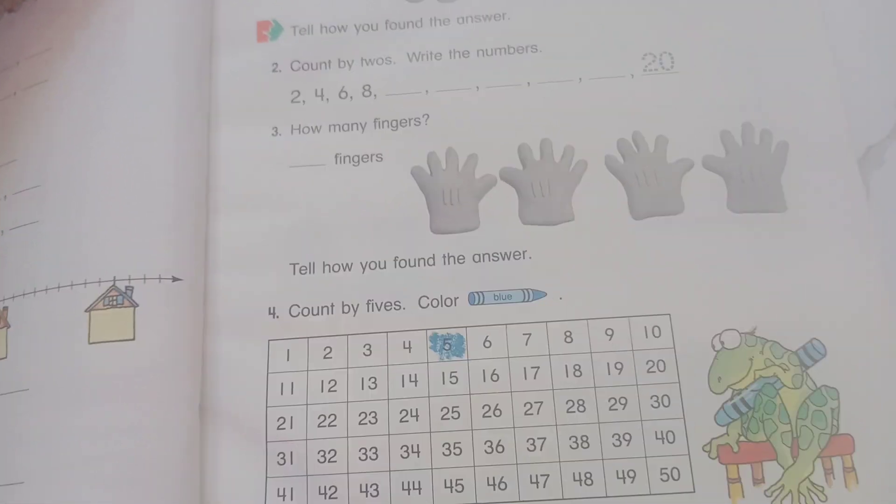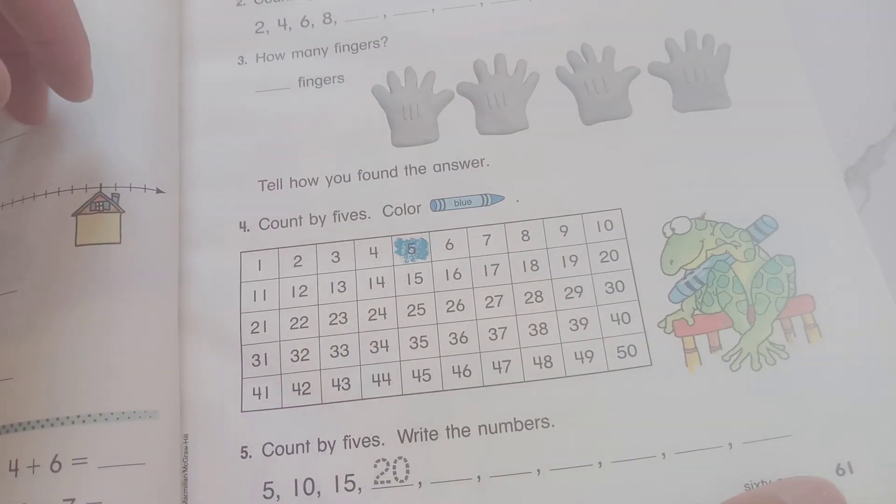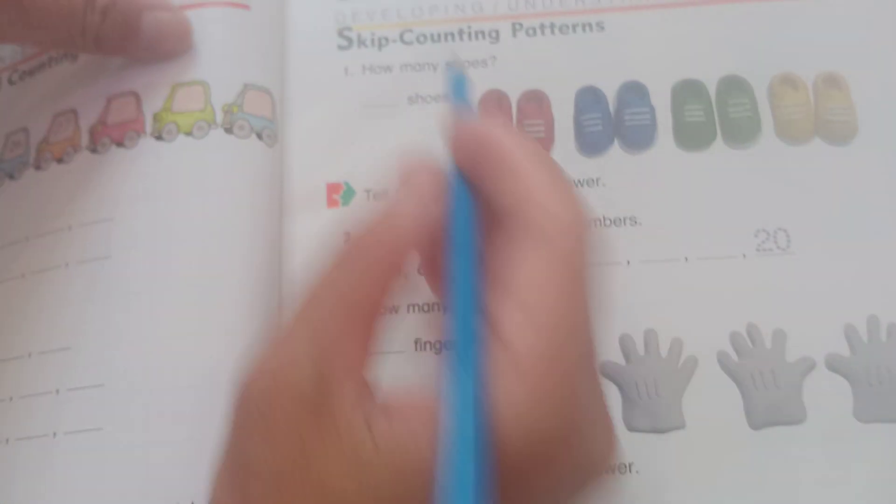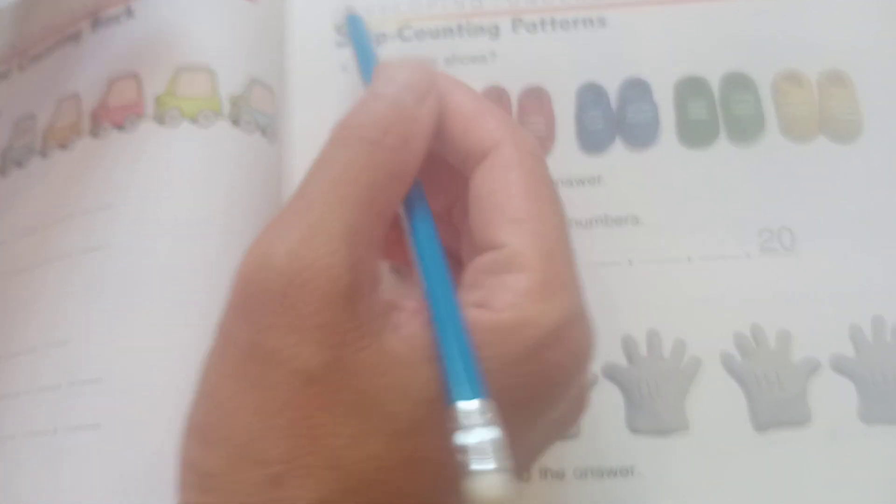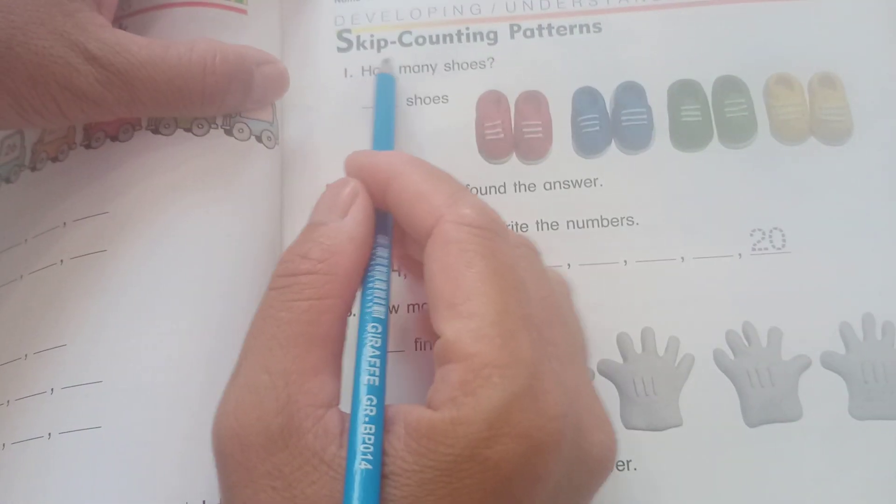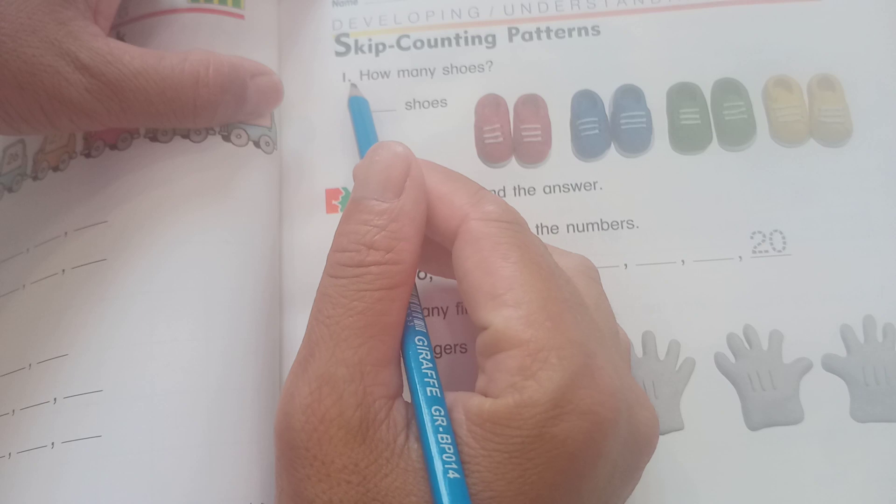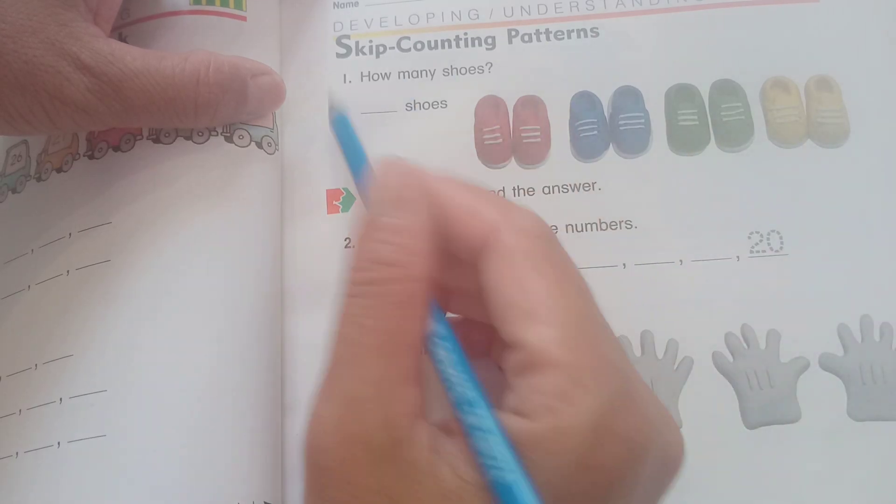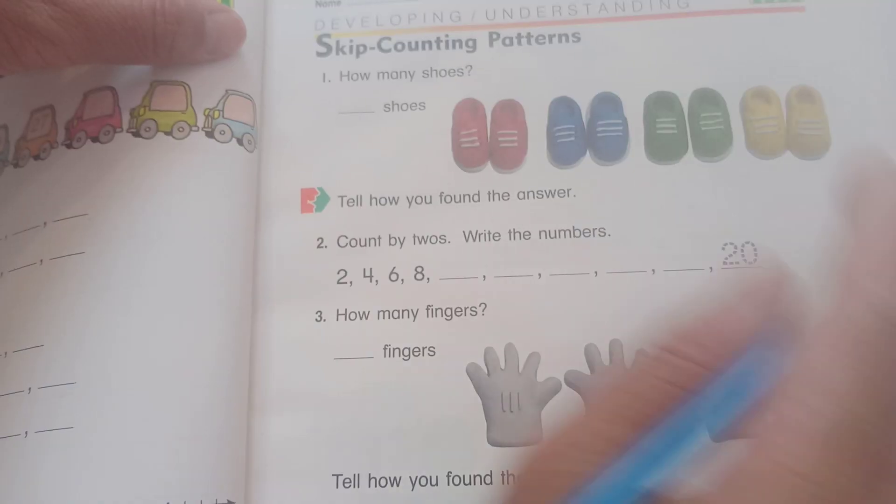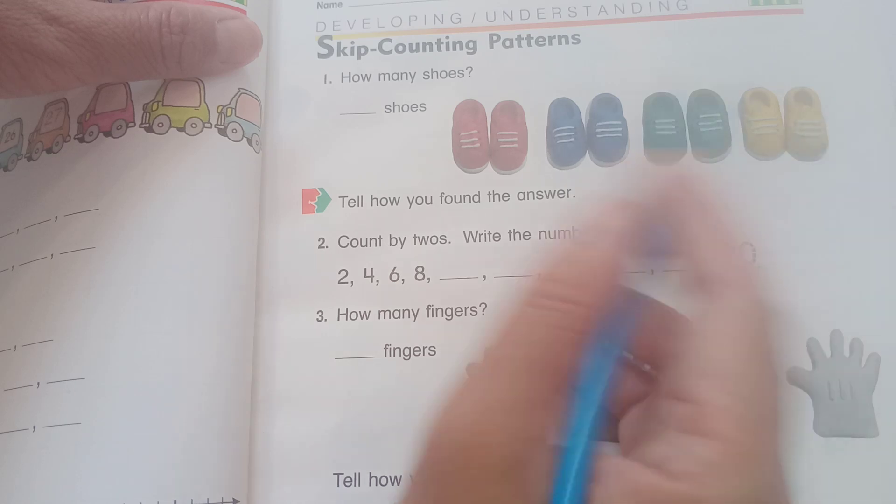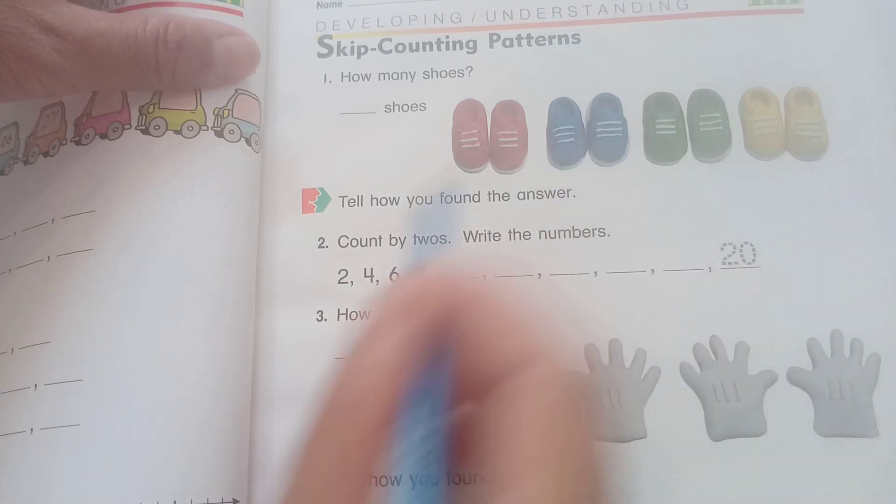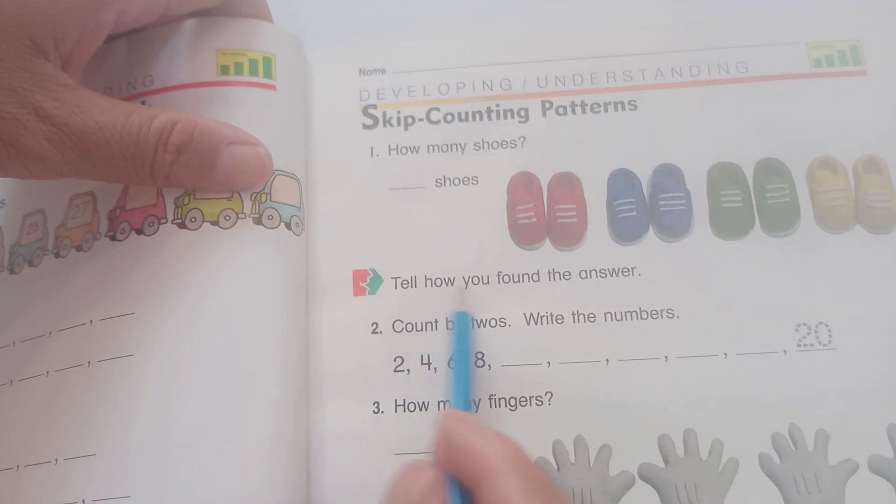Hello, happy to see you again on the Mathematics book on page 60. Now from the first, developing understanding has given counting patterns. One, how many shoes? Okay, so you can count how many shoes. Get one, two, three, four - four shoes. And one, two, three, four, five, six, seven, eight - eight shoes.